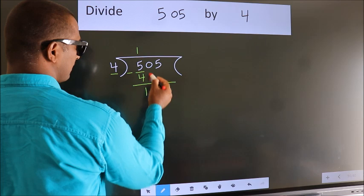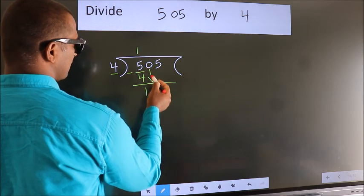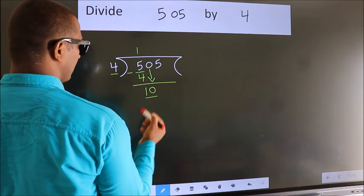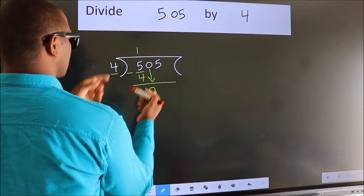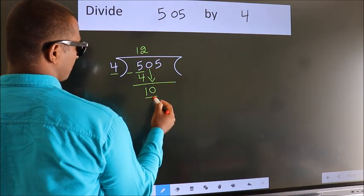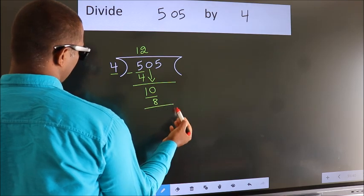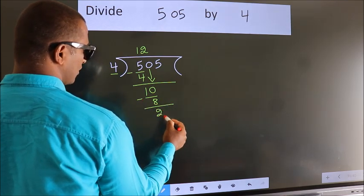After this, bring down the next number, so 0 down, giving us 10. A number close to 10 in the 4 table is 4 twos, which is 8. Now we subtract and get 2.